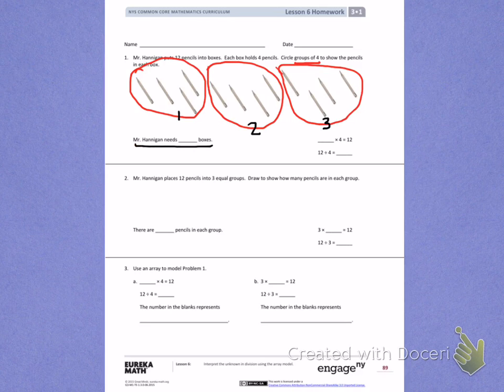So when I look at my sentence, Mr. Hannigan needs 3 boxes. Next, I have a multiplication problem where my groups are missing. I just figured out that I had to make 3 groups of pencils, so I'll put a 3 in that blank. Last on number 1, I see I have 12 divided by 4 equals blank. 12 was my total number of pencils, 4 was my size, 4 pencils in each group. And last, my groups was 3.